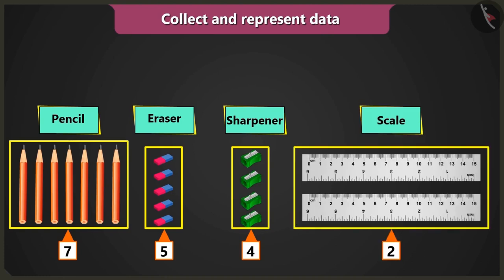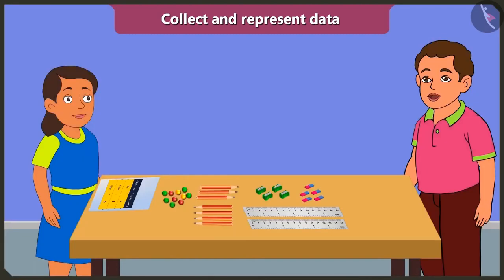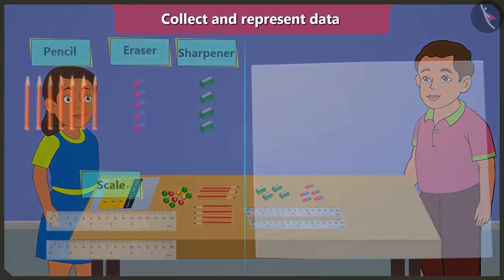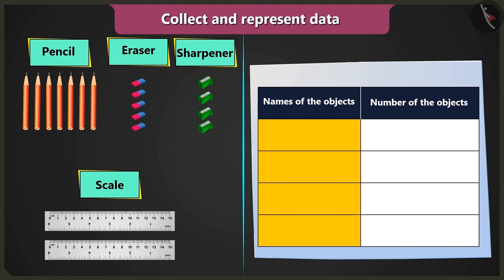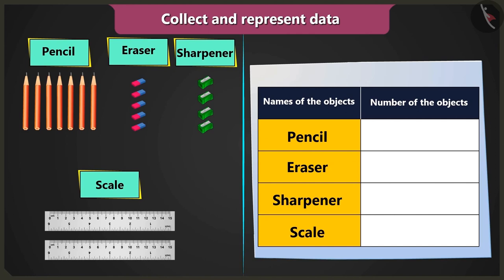Now you have to create a table for the same. Okay. I have made this table. I wrote the names of the objects in the first column and count of objects in the second column. Now write which objects are there in the column 'names of the objects'. In the column I wrote pencil, eraser, sharpener, and scale.